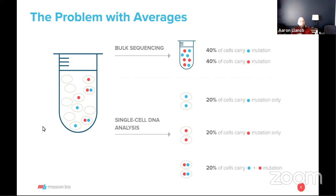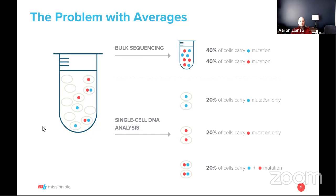In this cartoon, we illustrate two variants — a red and a blue — roughly at 40% variant allele frequency. With single-cell approaches, we can show there are actually three distinct clones: a blue single-mutant population at 20% clonal frequency, a red single-mutant population, and importantly a double-mutant clonal population. That double-mutant population is not accurately called by bulk sequencing, and there's significant room for improvement by leveraging this type of approach.